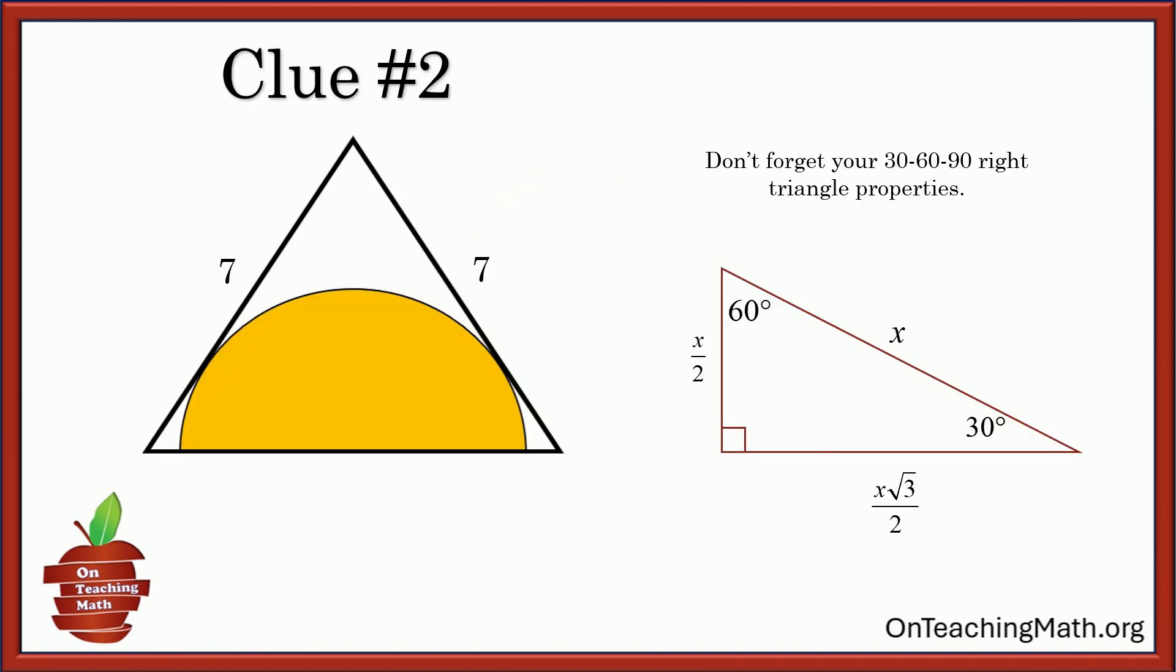So clue number two, don't forget your properties of special right triangles, the 30-60-90 degree triangles at play here. And as you can see the hypotenuse, well, that's double of the short side or the short side is half of the hypotenuse. The way you can tell it's short side, it's opposite of the 30 degree angle.